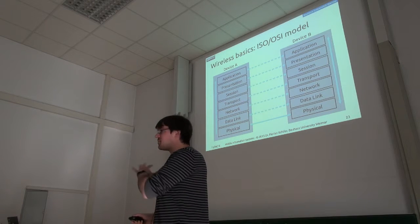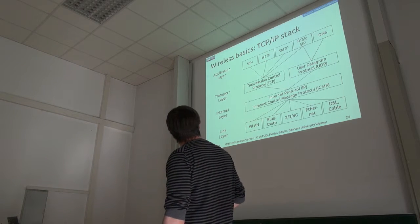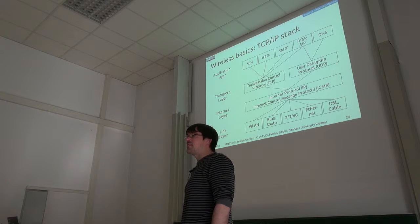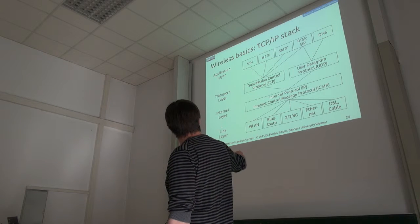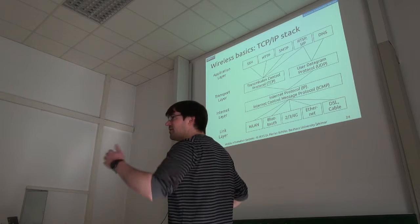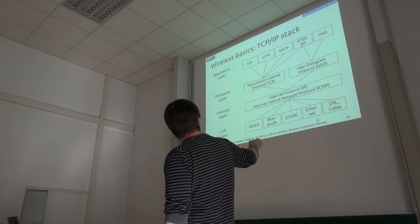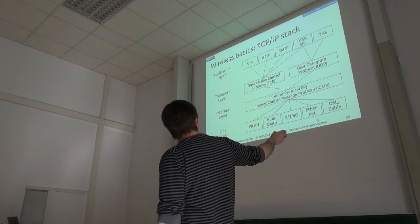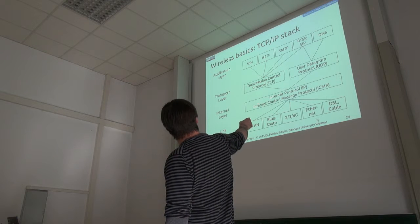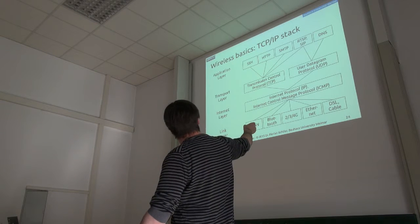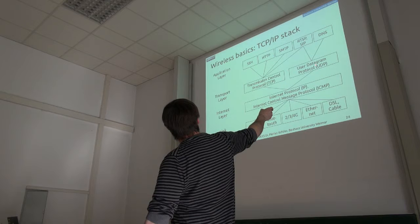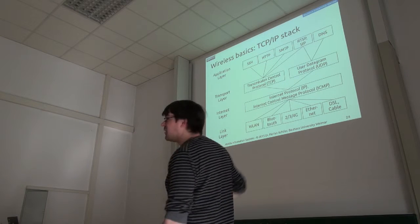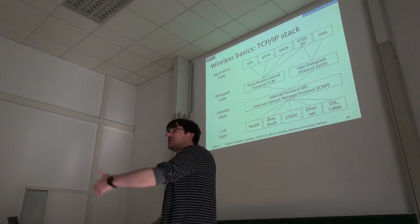If you map this to the internet protocols we use every day, on the lowest layer we have the link layer — wireless LAN, 2G, 4G, Ethernet, and so on. On top of that, the internet layer: IP, ICMP, and so on — the low-level protocols. Then the transport layer — TCP and UDP — same name as in the ISO model. And on the very top, the application layer — the different application protocols which use TCP, UDP, and so on.